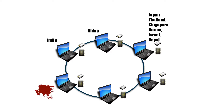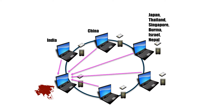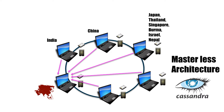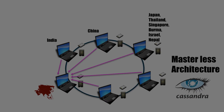There is another architecture where one machine in the cluster takes on the responsibility of a master — it processes the data of its respective country but also receives data from all other machines and calculates the top five richest Asians. This architecture is called a masterless architecture. One very popular technology using this architecture is Cassandra.